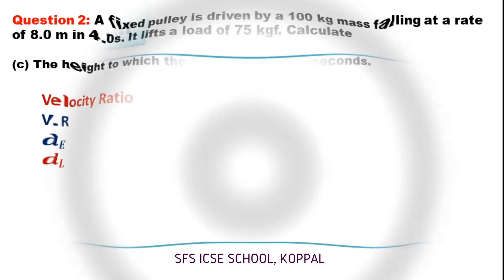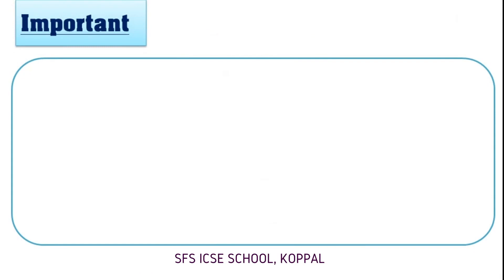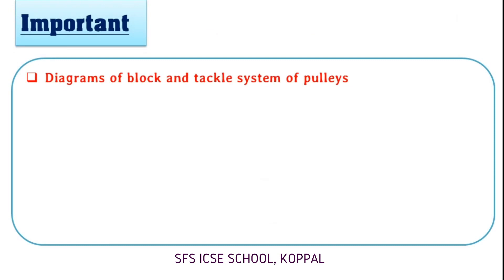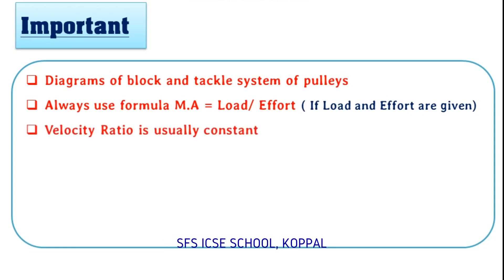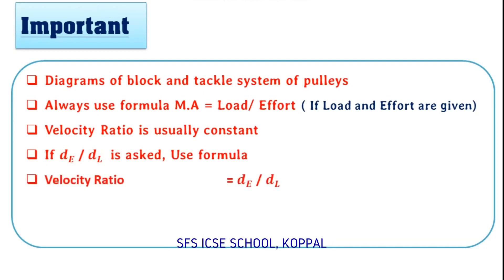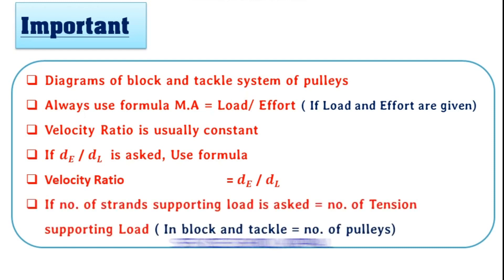Most numericals in this part are very easy. However, drawing the block and tackle system of pulleys diagram is very important and will surely come in the board examination. Always use mechanical advantage equals load divided by effort when load and effort are given, and velocity ratio is usually constant. If distance moved by effort or load is asked, use velocity ratio equals distance moved by effort divided by distance moved by load. The number of strands of tackle supporting the load equals the total number of pulleys in a block and tackle system.